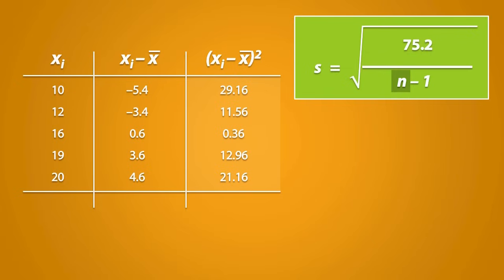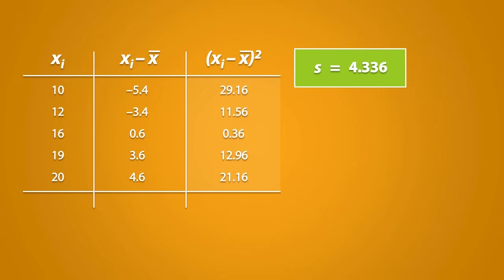n refers to the total number of data values, and there are 5 data values in this dataset, so n is equal to 5. We can simplify this, and we end up with a standard deviation that is equal to 4.336.